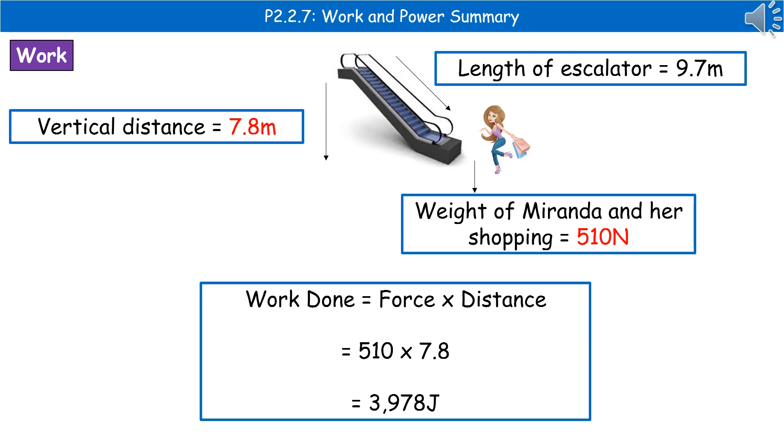The two bits of information we're actually concerned with are the weight of Miranda and her shopping and the vertical distance. We need to recall the formula of work done is force times distance, substitute in those two values, and then work it out on our calculator. So 510 times by 7.8 gives us 3978 joules.